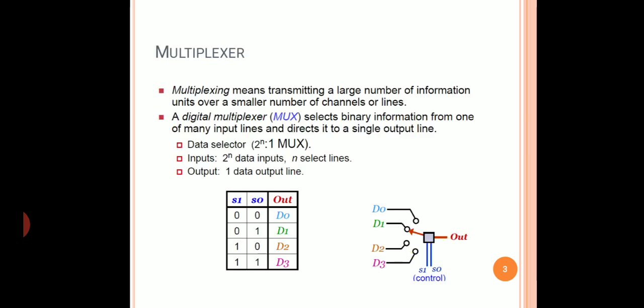What is a multiplexer? Multiplexing means transmitting a large number of information units over a smaller number of channels or lines. As shown in this diagram, there are four input lines and one output line. The data present on the four input lines is transmitted over the one output line, but it is controlled by the control bits, i.e. select lines S1 and S0. So based on the values of the select line, data present on every input line is transmitted over the output.